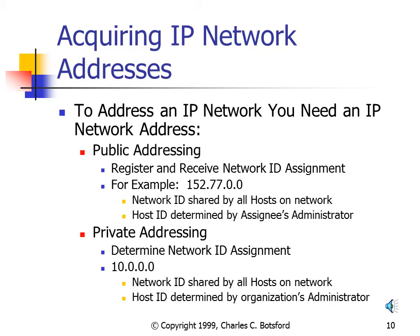When setting up your IP network, you need to choose or acquire an IP Address. With public addressing, your Network ID will probably be assigned by your internet service provider. For example, if your ISP gives you a class B address like 152.77.0.0, all hosts on your network share the Network ID 152.77, and the administrator assigns Host IDs using the last two octets. With private addressing, you determine your Network ID by checking RFC 1918 — for example, the class A address 10.0.0.0 — and then all hosts start with 10 as the Network ID, with the administrator using the last three octets for unique Host IDs.